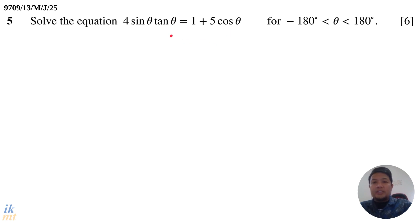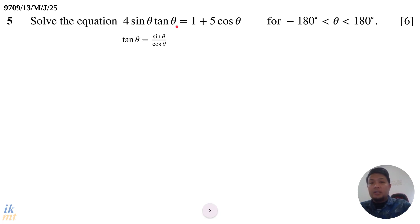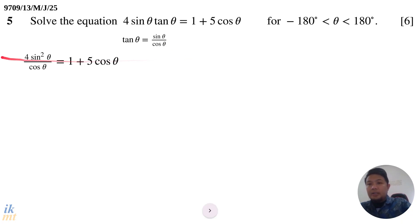One of the first things we can do is use the ratio identity of tangent theta: tangent theta equals sine theta over cosine theta. We can substitute tangent theta with this expression, and we will end up with 4 sine squared theta over cosine theta equals 1 plus 5 cosine theta.